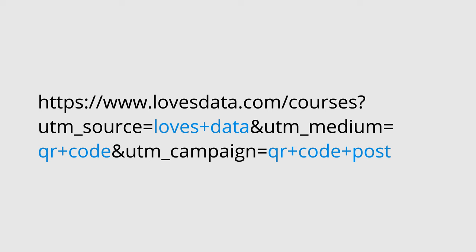Continuing our example, if we wanted to send people to www.lovesdata.com/courses, our tagged URL would look something like this. So the source is Loves Data, the medium is QR code, and the campaign is QR code post.